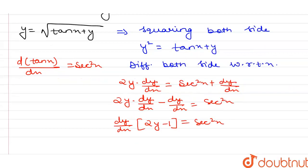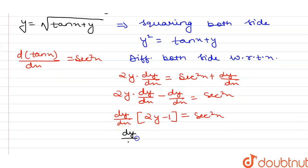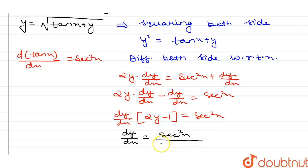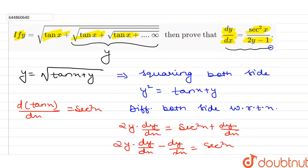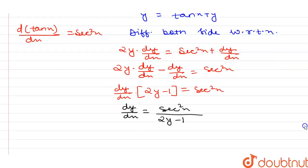So dy/dx is in multiplication with 2y minus 1. If I move 2y minus 1 to the right-hand side, it goes into division, so I can write: dy/dx equals sec²x divided by 2y minus 1. This is exactly what we had to prove, so — proved. Thank you.